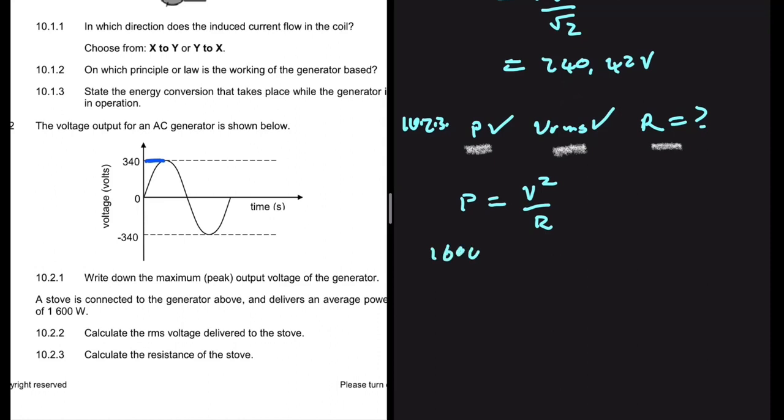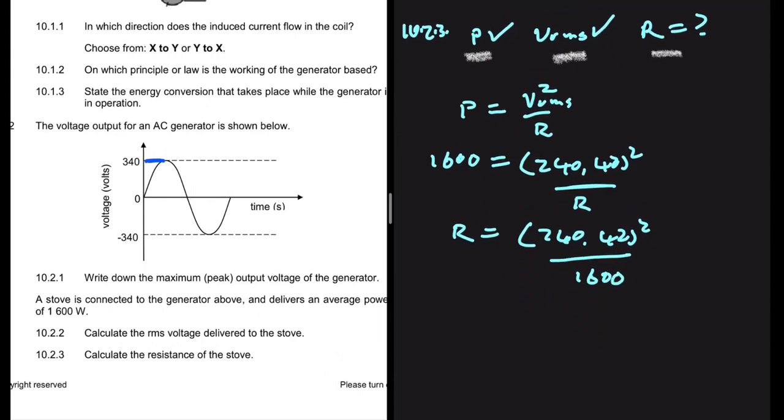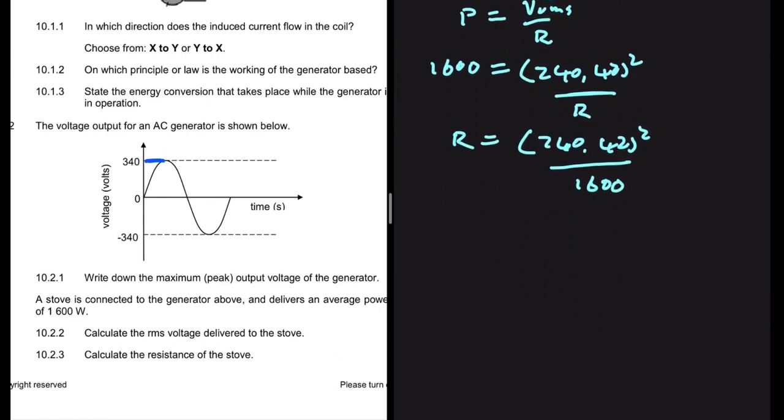The power is 1600. The voltage, or V_rms rather, is 240.42 squared divided by the resistance. So the resistance will be equal to 240.42 squared divided by 1600. If you put that in your calculator, you shall get 36.13 ohms.